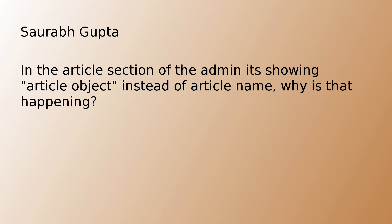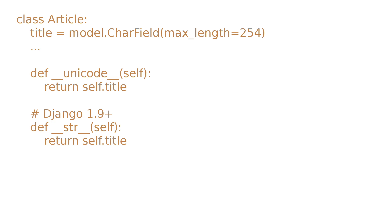Sor Gupta comments on our Python Django tutorial number five, the built-in admin interface, and says in the articles section it's showing article object instead of article name. So basically, when you go into the admin, you should see under your articles section a list of titles of the articles. The way you implement that is you need to add in a line which basically says def __unicode__, and then create a function from that which just returns the article title.